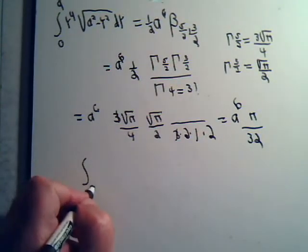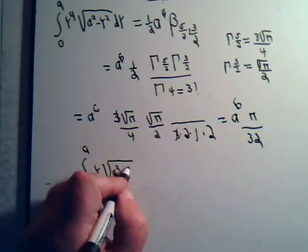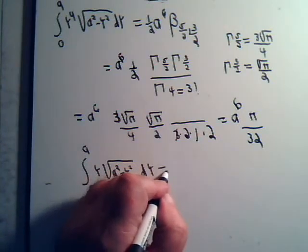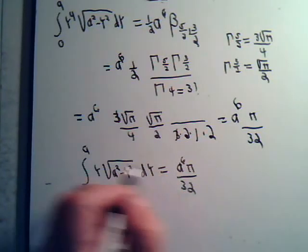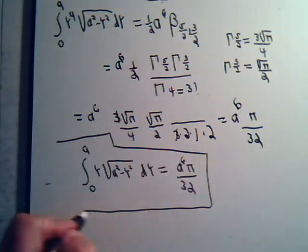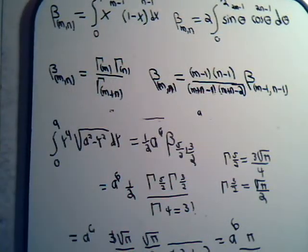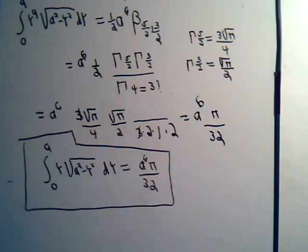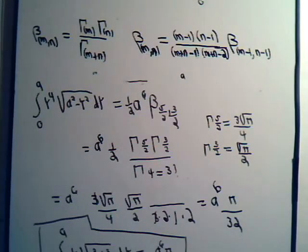So this integral equals a to the sixth times pi divided by 32. The whole thing hinged upon being able to transform the original integral into a beta function, and then use the gamma function relationship to get a numerical answer. We'll come back and do one more integral problem of this form that might be even a little more complicated than what we've considered in this video.